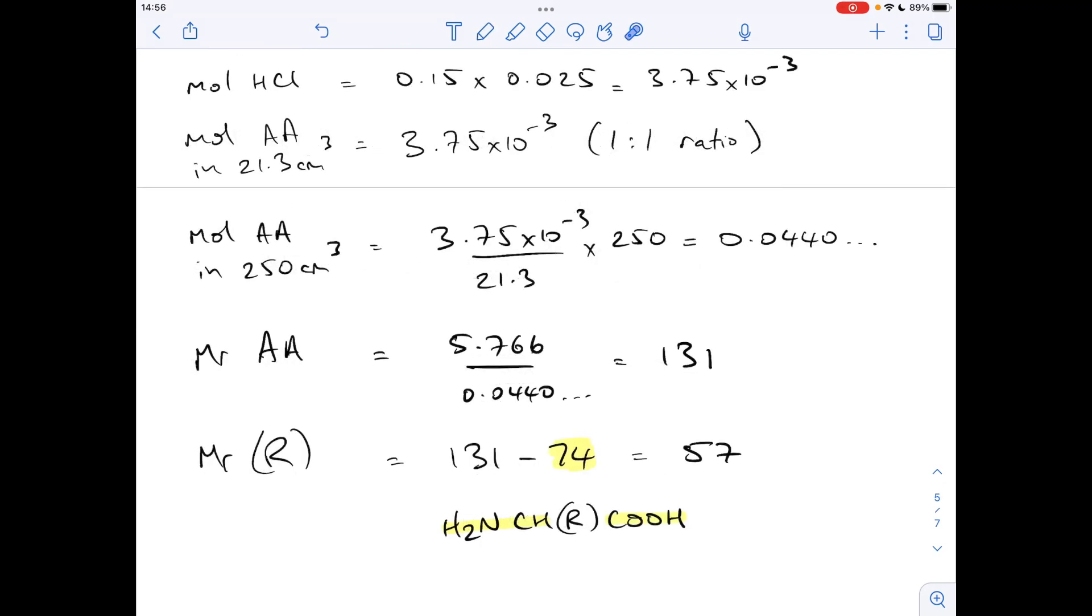That's coming out at 57 for the R group. You can see what I've done there. There's that general formula again. I've worked out the MR of the bit we do know, that's the 74. Take that away from the 131 MR. Gives us an MR for the R group of 57.